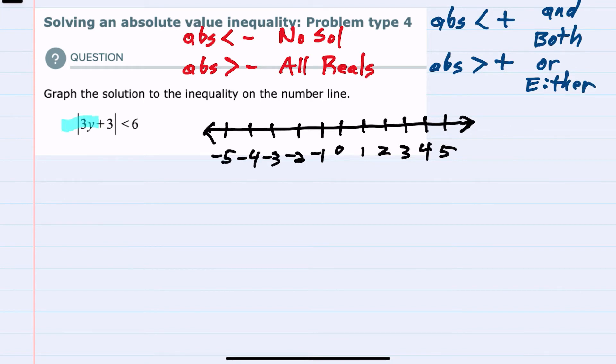Looking at this example, we have an absolute value less than a positive. So that's going to be this where we're going to need our two solutions to overlap. We're going to need both to be true in order to satisfy the inequality.